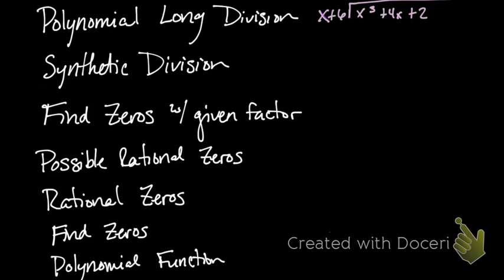Or the synthetic division where we had the special box and we had our coefficients, and we would add them together and get these weird numbers so that we would end up with the remainder, the constant, the power of 1. Finding zeros with given factors, you would do the same thing. You would find the root, and then we'd use synthetic.